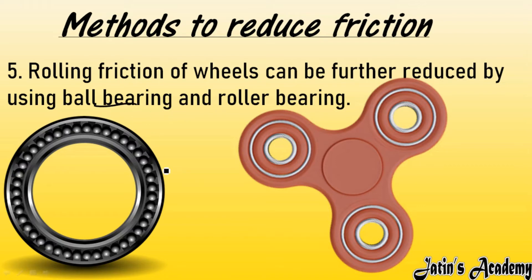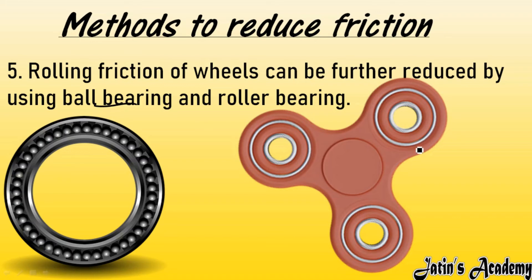In drawers, ball bearings are attached, which is why we can easily open them. Without ball bearings, we would need to apply more force. With ball bearings, rolling friction is further reduced. Even a fidget spinner has a ball bearing at its center, which allows it to rotate easily with little applied force, because rolling friction is very less.